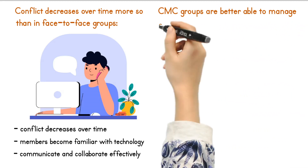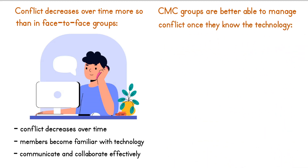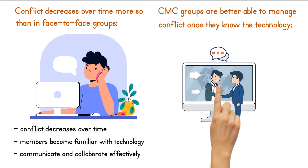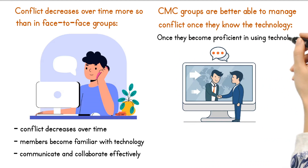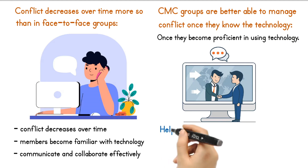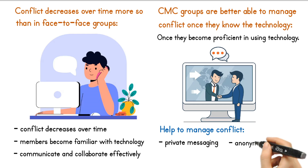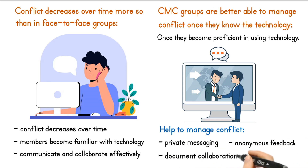CMC groups are better able to manage conflict once they know the technology. CMC groups may have an advantage over face-to-face groups when it comes to managing conflict once they become proficient in using the technology. CMC platforms often have built-in features that can help to manage conflict, such as private messaging, anonymous feedback, and document collaboration tools. Group members can use these tools to communicate and address conflict in a more controlled and structured manner.